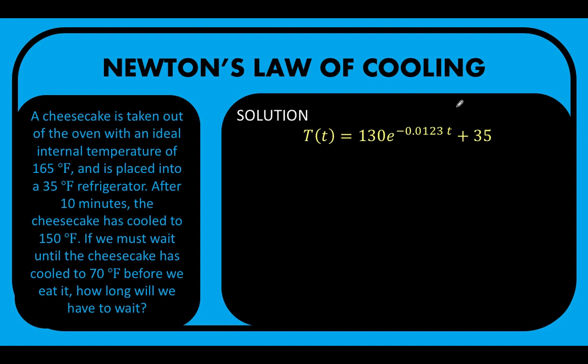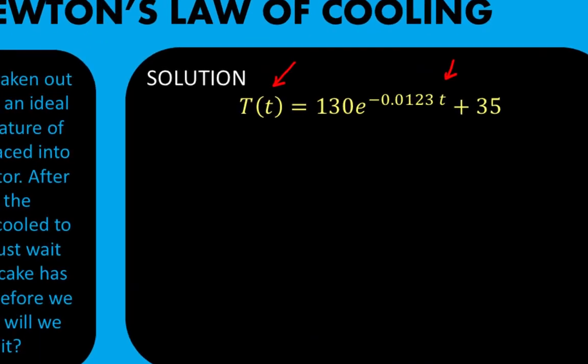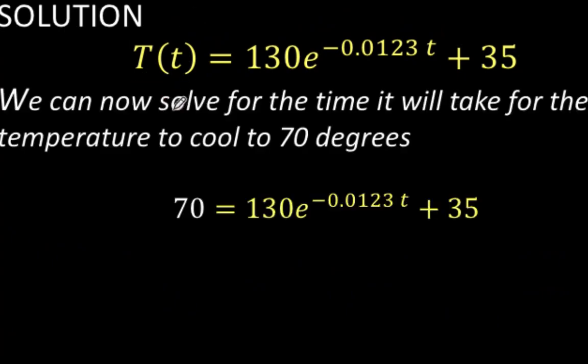This is now easy to compute because we only have two variables left. We have the variable for small t, which is the time, and we have the variable for the temperature.